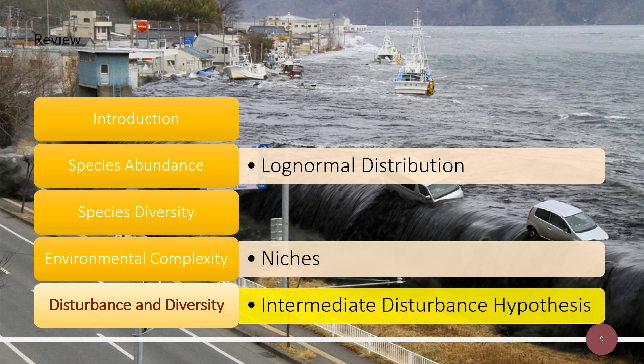We've talked about the impact of disturbance on diversity. Previous lectures covered species abundance and the log-normal distribution, species diversity and rank-abundance curves, the diversity index, and the role of environmental heterogeneity and complexity on diversity, as well as different niches for both plants and animals.